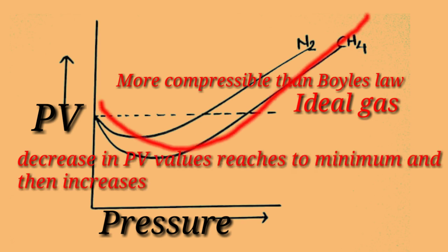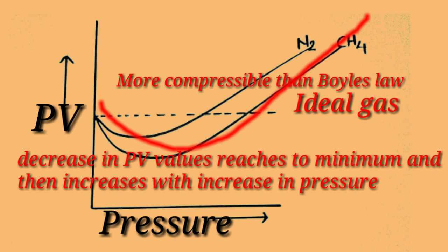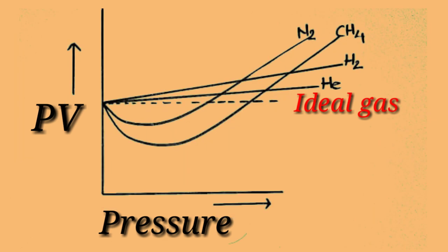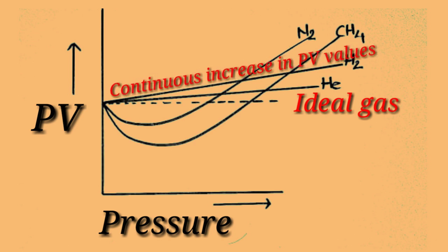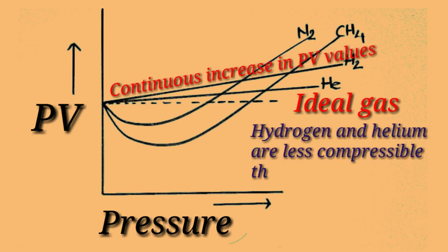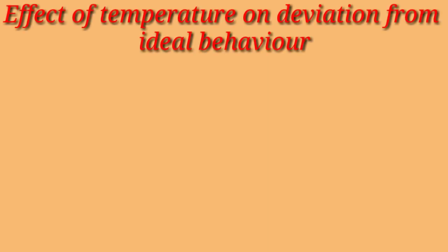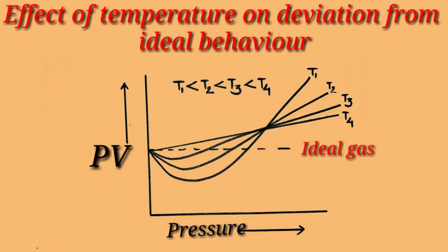This decrease in PV values continues, passes through a minimum, and then increases with increase in pressure, meaning compressibility is now less than expected. Also, hydrogen and helium show exceptional behavior with a continuous increase in PV values from the start, due to their lower compressibility compared to an ideal gas.